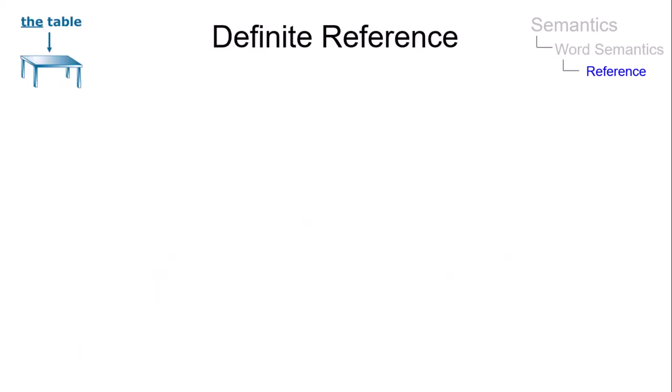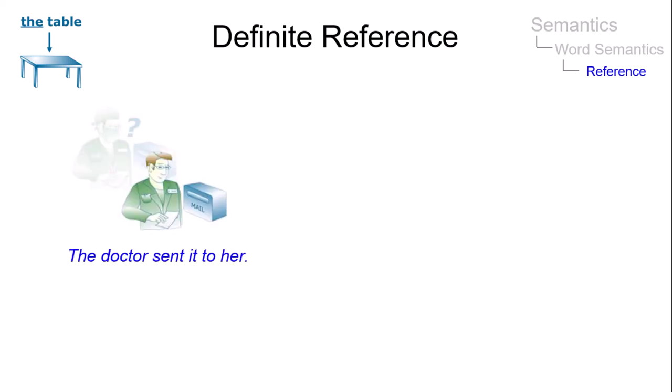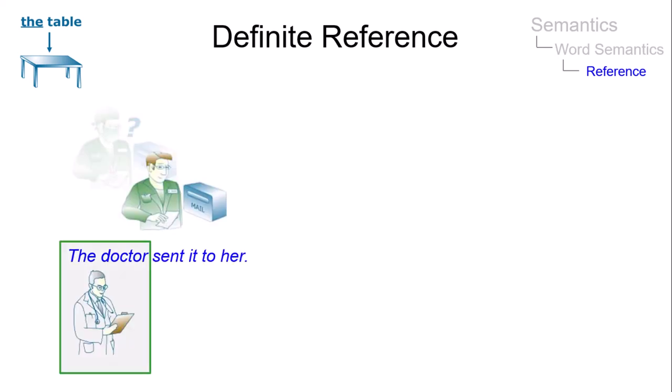Definite reference is an act of identifying entities through linguistic expressions. In this example, the noun phrase 'the doctor' can be uniquely identified by both the speaker and the listener.